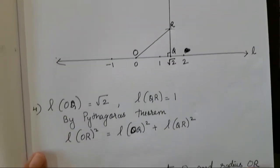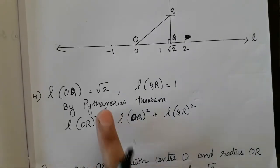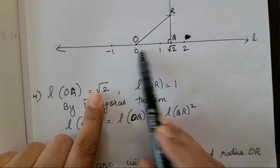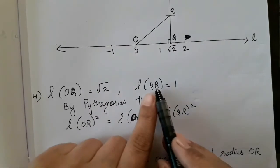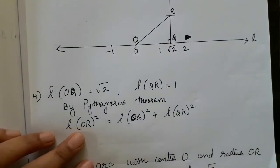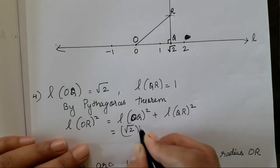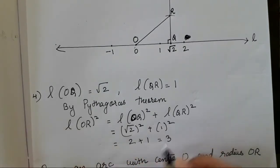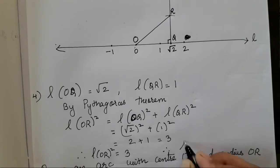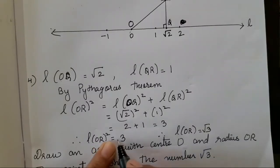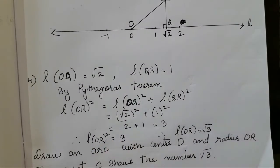Now the last step is we have to find using Pythagoras theorem. We have taken OQ that is root 2, which is 2 units. QR that is this distance was 1 centimeter. By using Pythagoras theorem, placing these values, this will be 2 plus 1 which is supposed to be 3. Therefore, length of OR square is 3. Therefore, length of OR is supposed to be root 3.